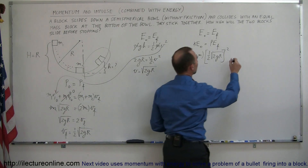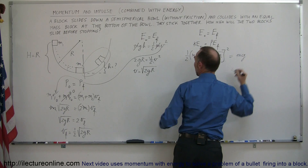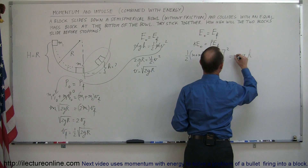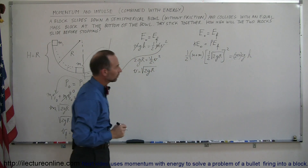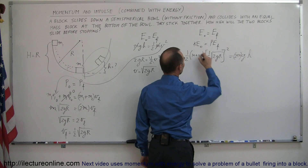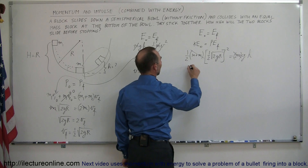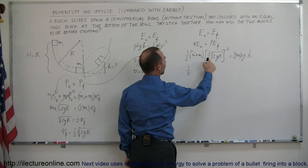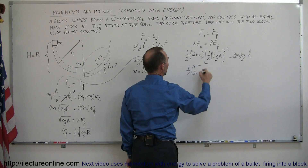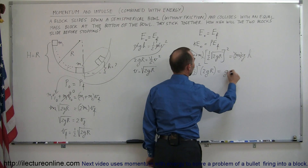That kinetic energy equals the potential energy of the two blocks when they reach maximum height: 2m times g times h. We have 2m on both sides, so those cancel. We then have one-half times one-half squared times 2gr, which equals g times h. There's a g on both sides, so we cancel those. One-half times one-half squared gives one-quarter, so one-quarter times r equals h.